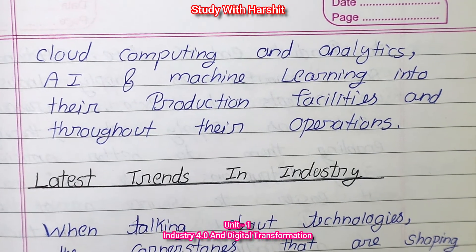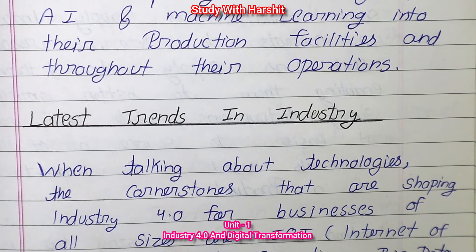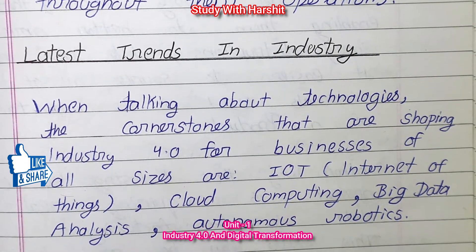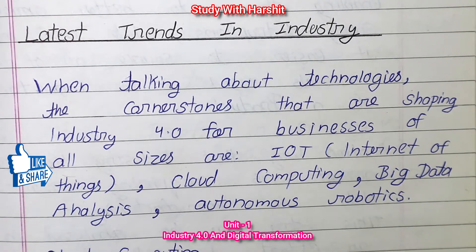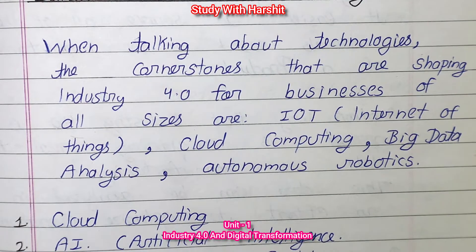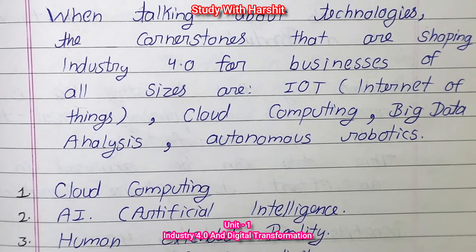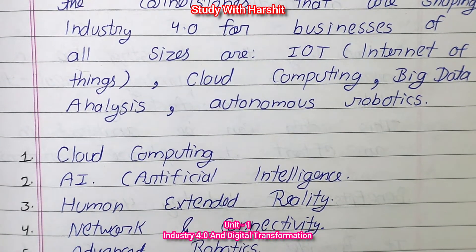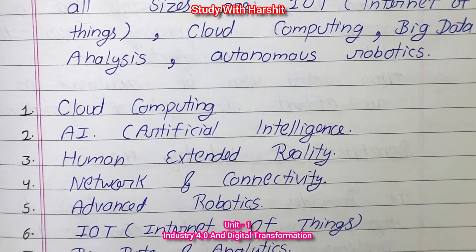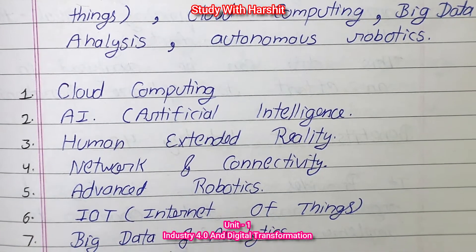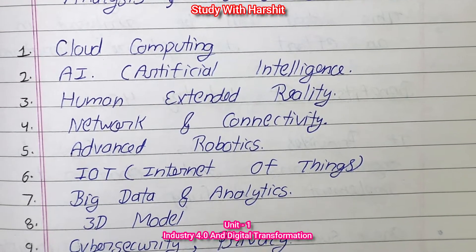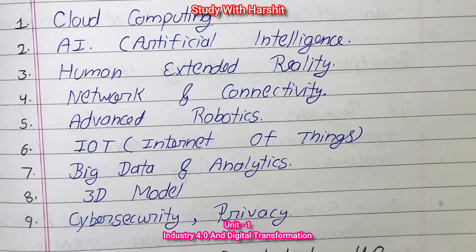Latest Trends in Industry 4.0: The key technologies shaping Industry 4.0 for businesses of all sizes are: IoT (Internet of Things), Cloud Computing, Big Data Analytics, Autonomous Robotics, AI (Artificial Intelligence), Human Extended Reality, Network and Connectivity, Advanced Robotics, and Cyber Security and Privacy.